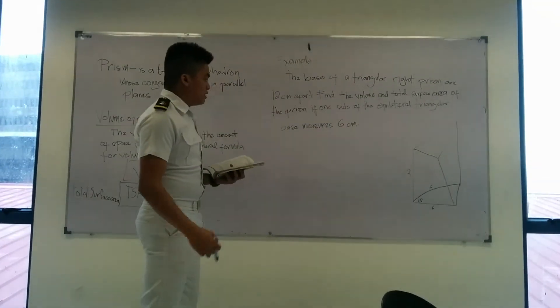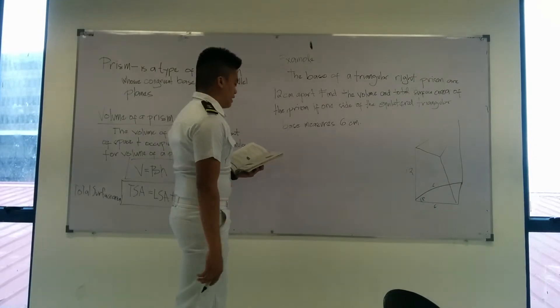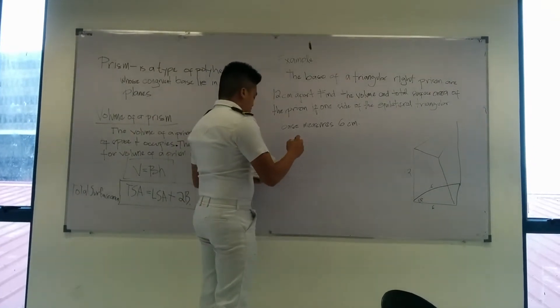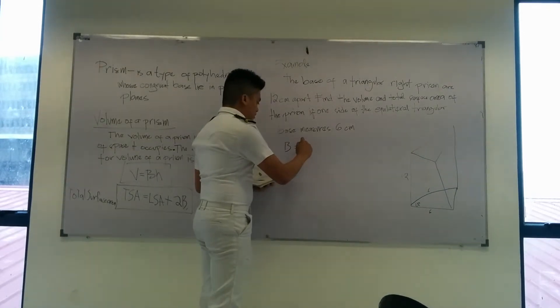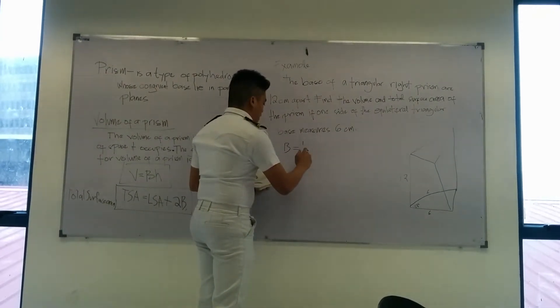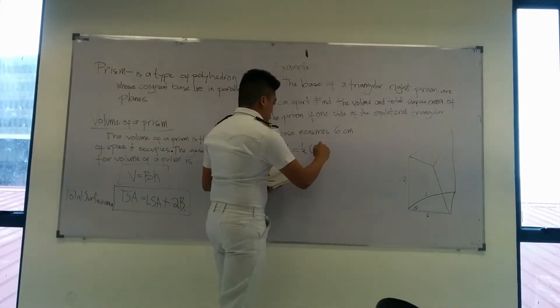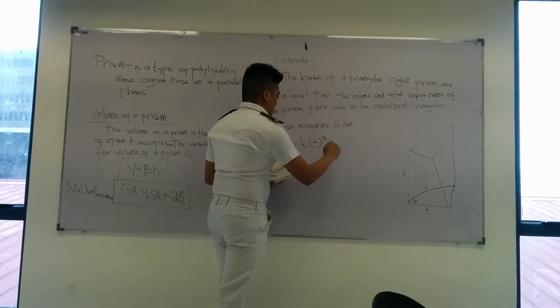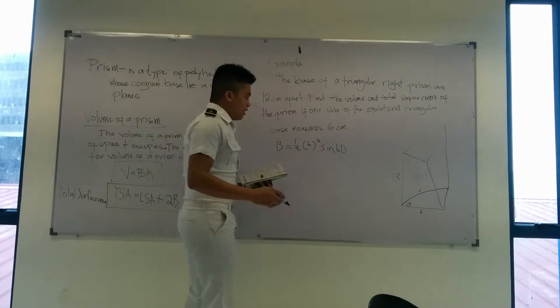To get the base of the triangle, the formula of prism is equal to 1 half times 6 squared. And this is the base measure.